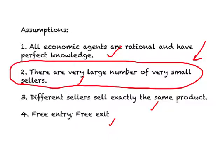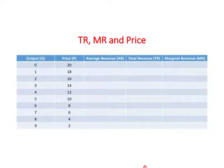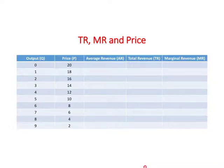When we say each firm will have some control over the price, what this means is that the firm will ultimately have to sell this product to consumers. Consumer behavior is such that they tend to buy more when the price is lower and less when the price is higher. So the firm will charge a lower price at a higher level of output and a higher price at a lower level of output.